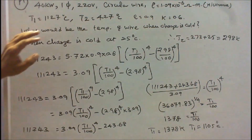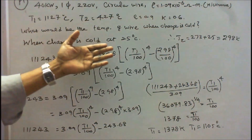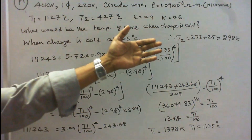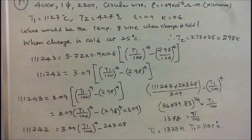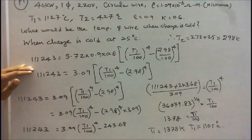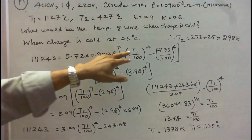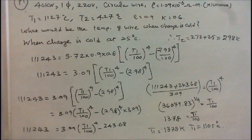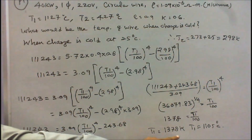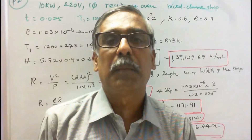The second part asks: what would be the temperature of the wire when the charge is cold? When the charge is cold at 25°C, T2 equals 273 plus 25 equals 298 Kelvin. We already found H equals 11,243 W/m². Substituting into the equation and solving for the unknown T1, we find T1 equals 1378 Kelvin, or approximately 1105°C.